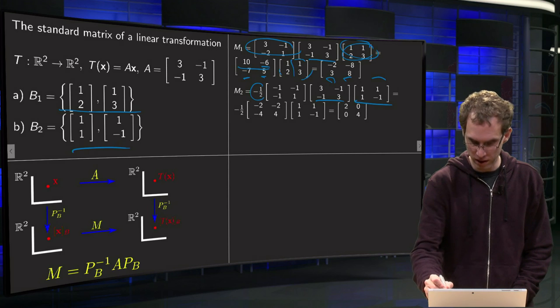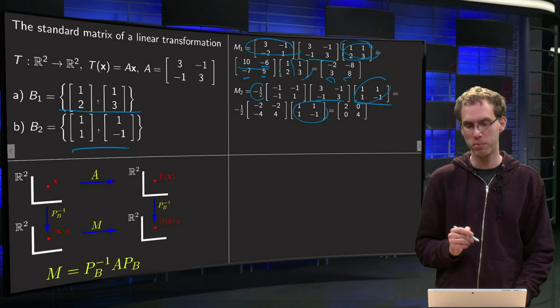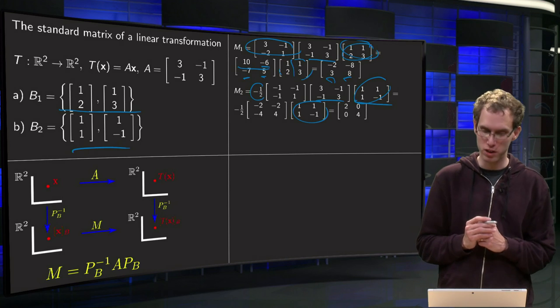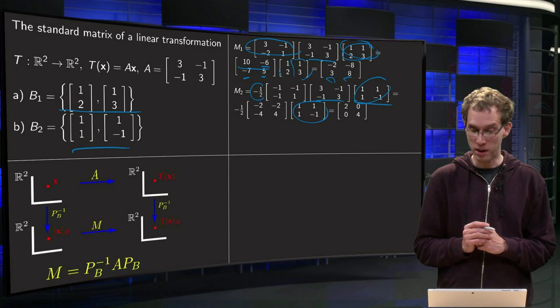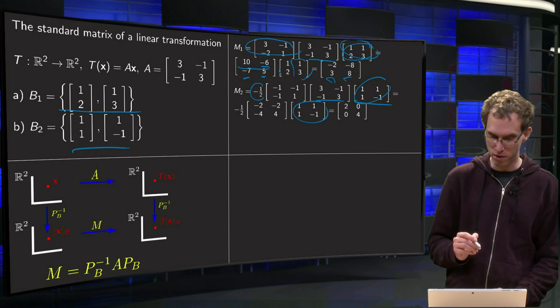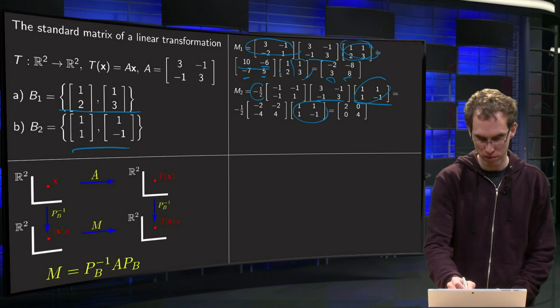And the first step, we leave this matrix over here, compute the first matrix product first: minus 3 plus 1 equals minus 2, minus 3 minus 1 equals minus 4, 1 minus 3 equals minus 2, and 1 plus 3 equals 4, first matrix.